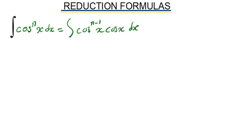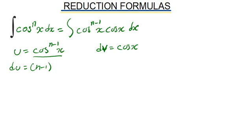I'm going to integrate by parts where I'm going to set my u to be equals to cosine to the n minus 1 of x. Then my dv be equals to cosine of x.